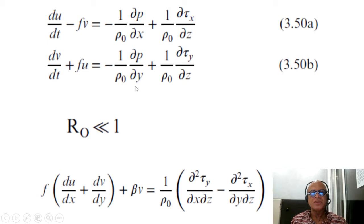That's equal to 1 over rho_0. The pressure terms cancel out because you have dx dy, dx dy and the signs. You end up with d²tau_y/dx dz minus d²tau_x/dy dz, right?